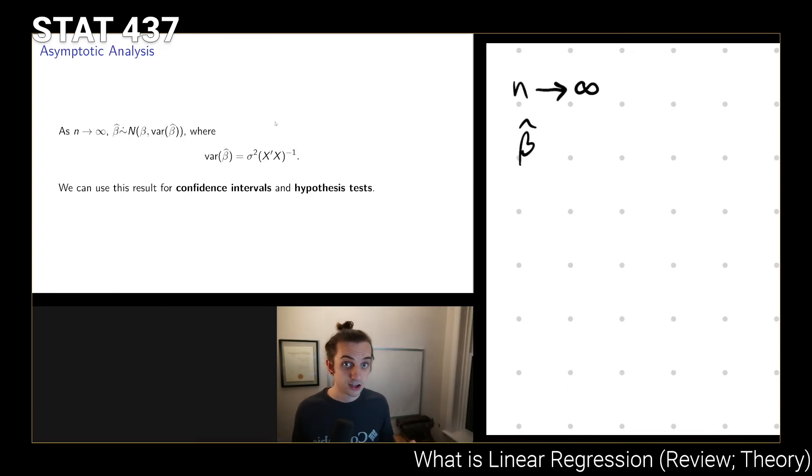Because of that, we can do things like generating confidence intervals by taking beta hat plus or minus 1.96 times the standard error of beta hat. And this value right here, this 1.96, is our z-score value corresponding to 0.975. So that's a standard Wald-type confidence interval.